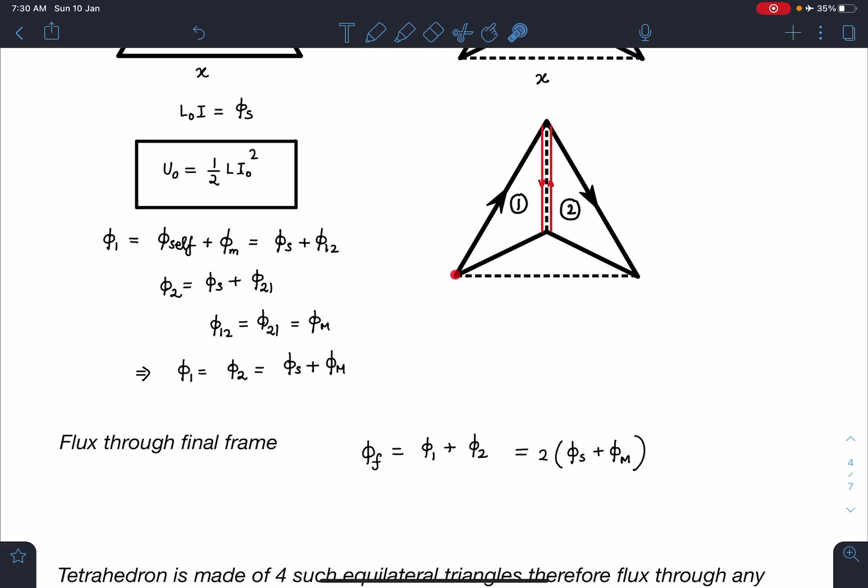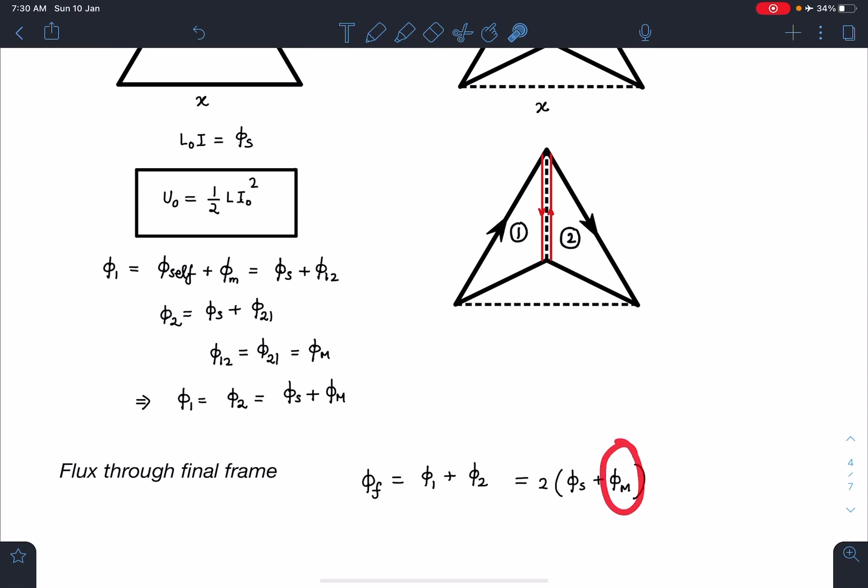Let's go to the next part of it. I can say net flux passing through this entire frame now. In this situation this net flux is going to be φ₁ + φ₂. φ₁ + φ₂ is nothing but double of this because φ₁ = φ₂. So, 2(φ_self + φ_m). φ_self is known to us that is L₀I.